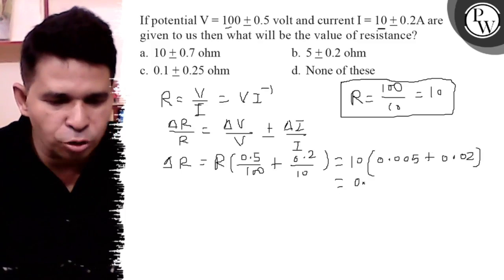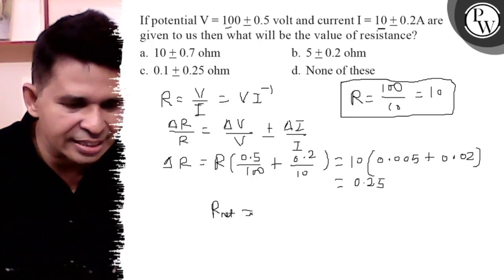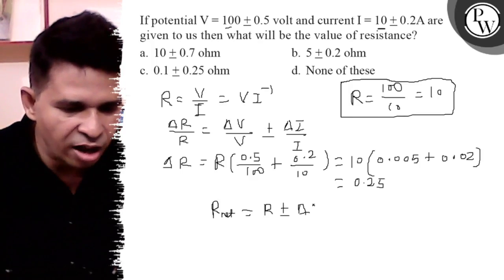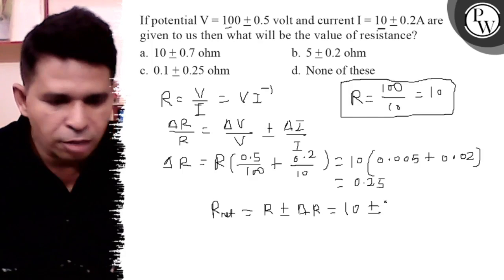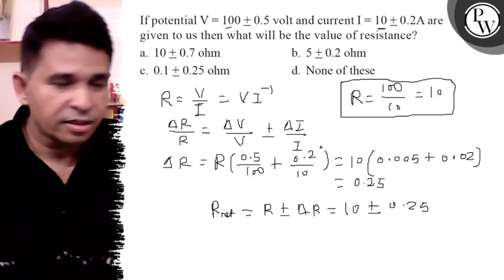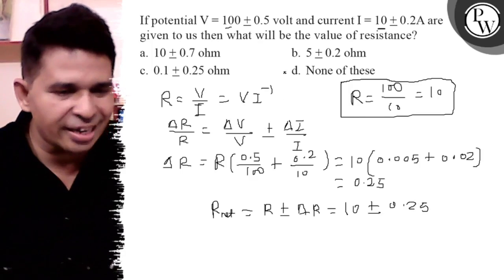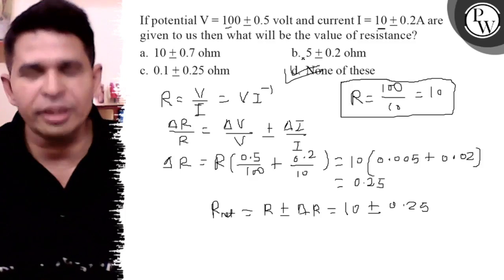So what is the final answer? R_net is R ± ΔR. So R is 10 ohm and ± 0.25. But no option is there, so final answer is D. Thank you, all the best.